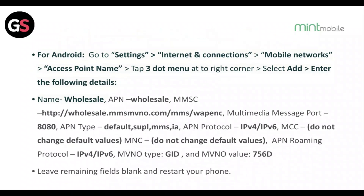For Android, go to Settings, then Internet & Connection, then Mobile Networks, then Access Point Name. Tap the three-dots menu in the right corner, select Add, and enter the required details. Leave the remaining fields blank and restart your phone.